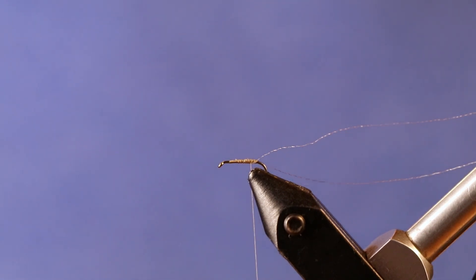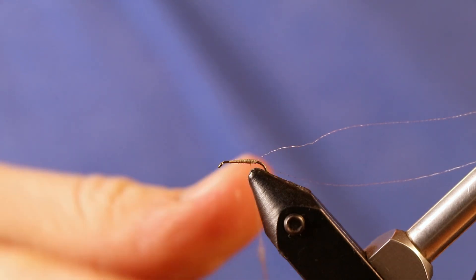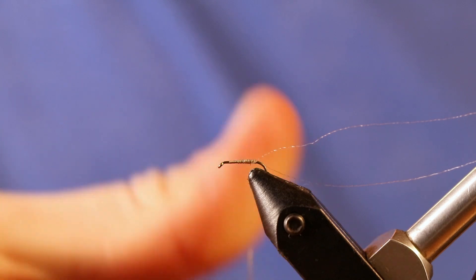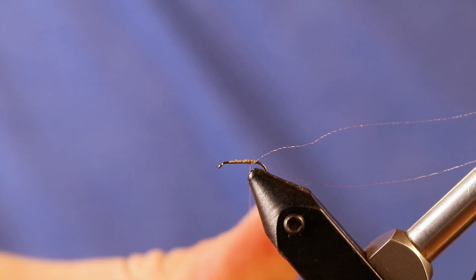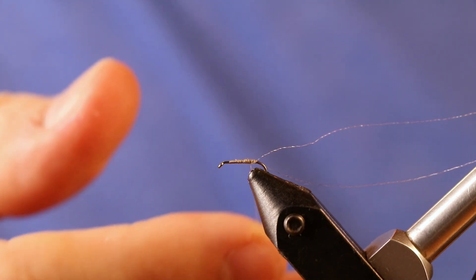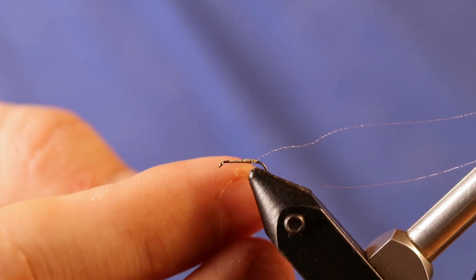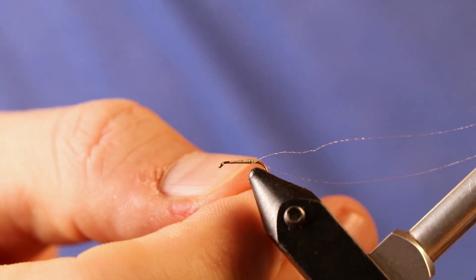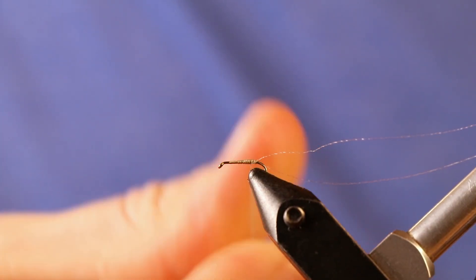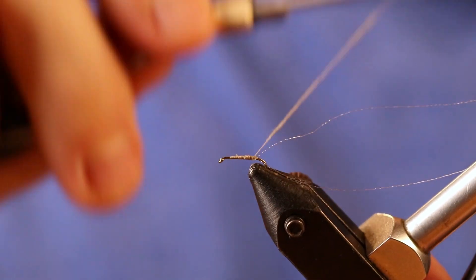Now I'm going to create a dubbing noodle on here. I'm using super fine dubbing in Adam's gray. I'm just going to use a tiny bit to create a very thin noodle on my thread. This is 8/0 thread, by the way, in tan. You can do gray or tan, just probably not red or green or something like that, unless you're tying a green one. I'm going to work my dubbing noodle right up close to where my hook is.